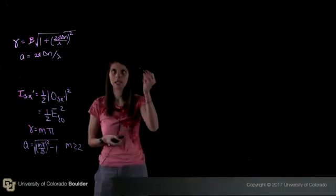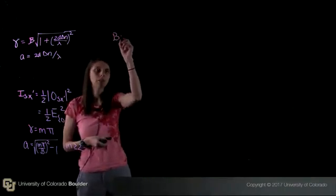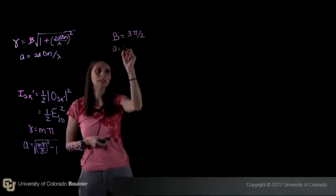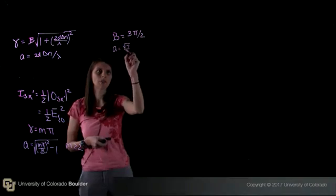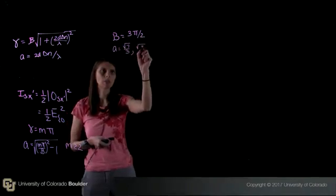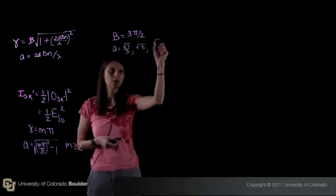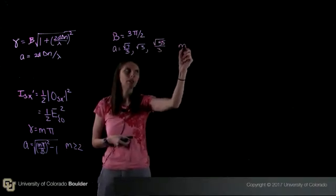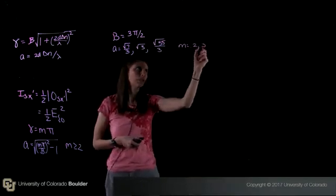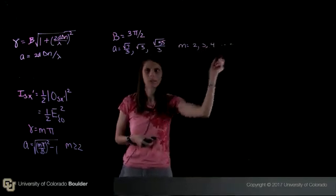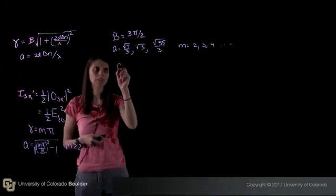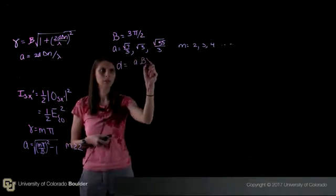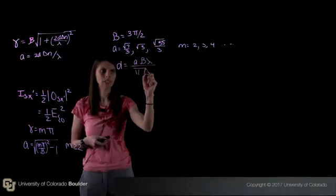So now let's take the case of beta equal to 3 pi over 2. What we find is that a is equal to the square root of 7 over 3, the square root of 3, or the square root of 55 over 3, and this is for m equal to 2, 3, 4, etc. So the condition for the cell thickness is that d has to equal a beta lambda over pi times delta n.